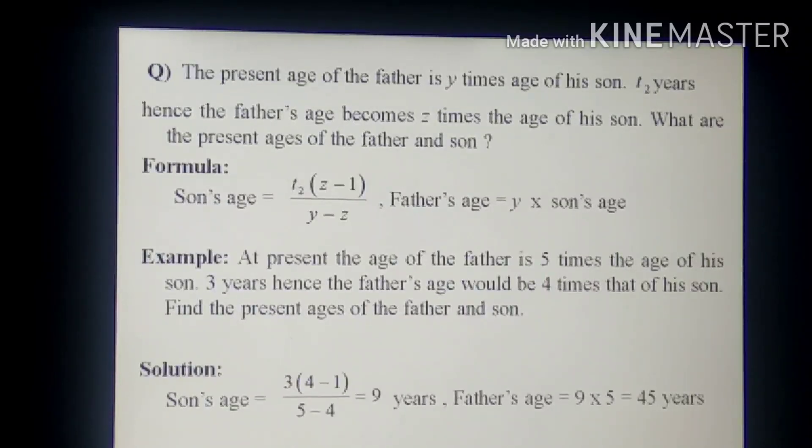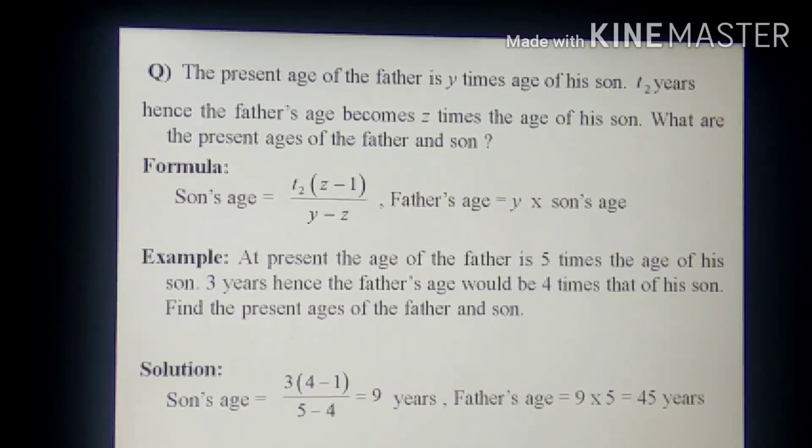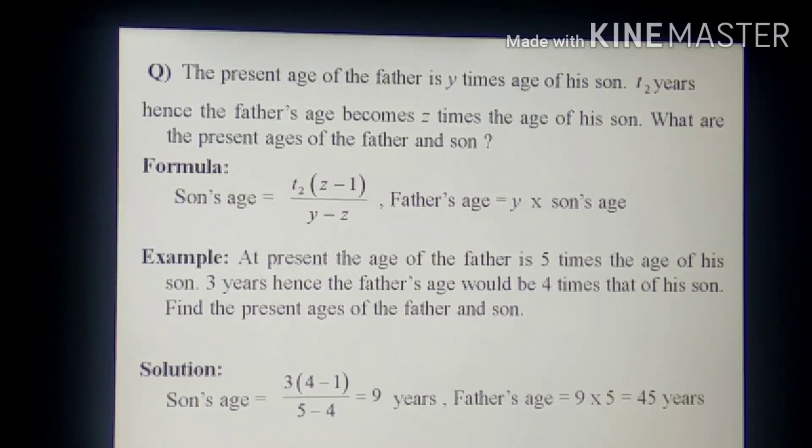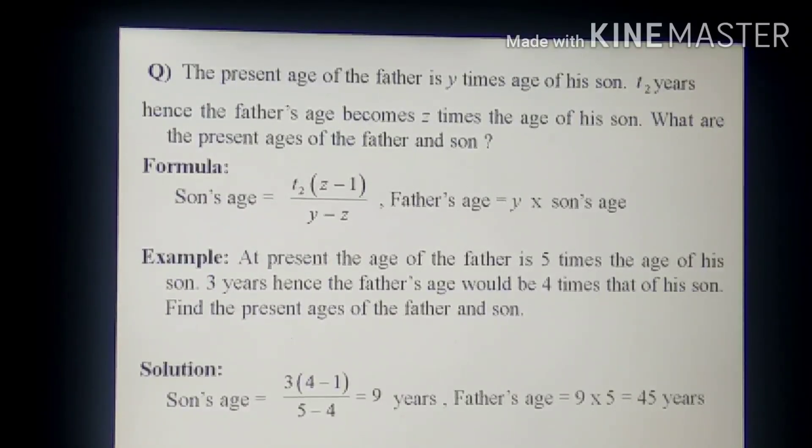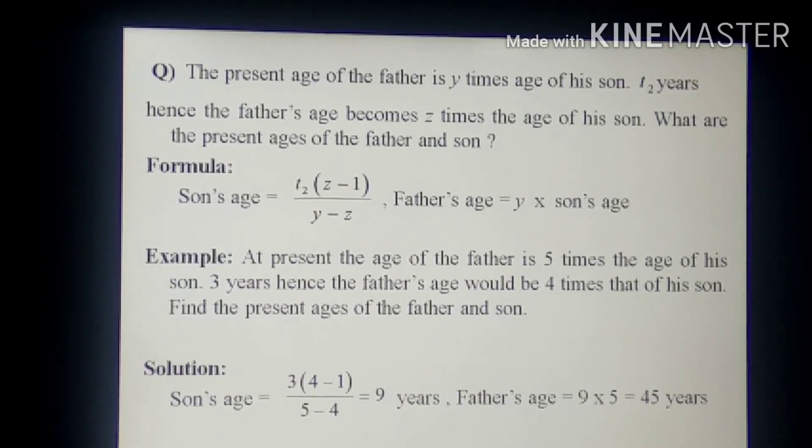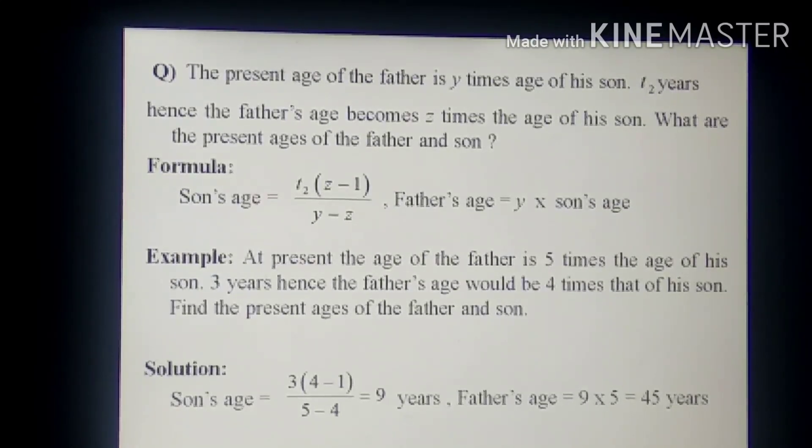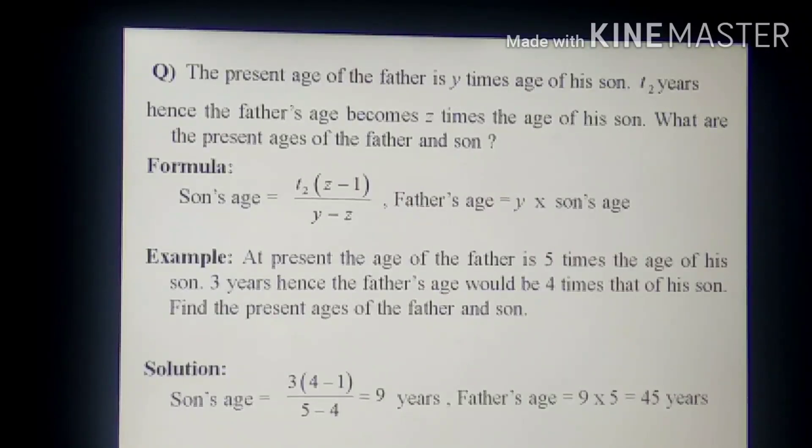Let's see our next problem. The present age of the father is Y times that of his son. T2 years hence, that means after T2 years, the father's age becomes Z times the age of his son. What are the present ages of the father and son?